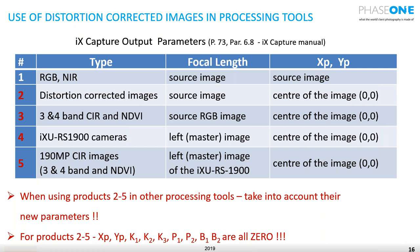To summarize: when using products 2 through 5 in another processing tool, take into account the new parameters. A customer recently took 4-band CIR into a processing tool and it didn't work even though they used the correct calibration — because those CIR files are already corrected files. If you're using corrected files for products 2 through 5, you need to set xp, yp, k1, k2, k3, and all related parameters to zero and use the correct focal length. This will save you quite a lot of time.